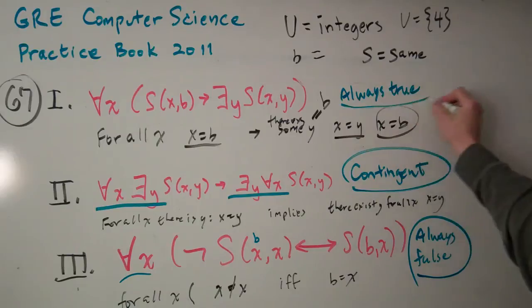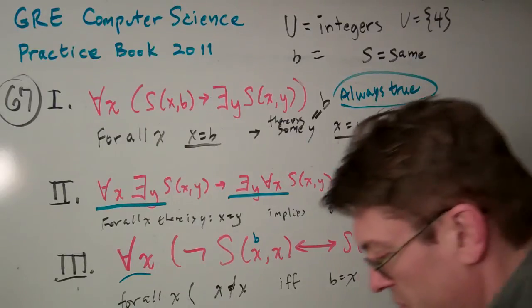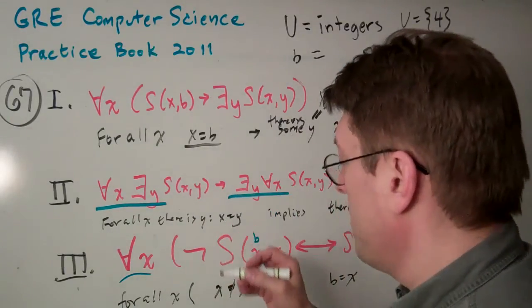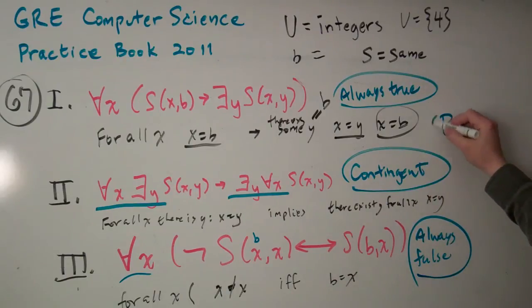So this one's always false, this one's contingent, and this one's always true. So that is answer B. So the answer to the question is B. Always true, contingent, always false.